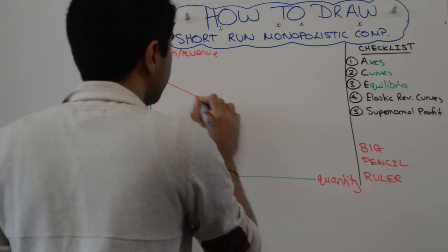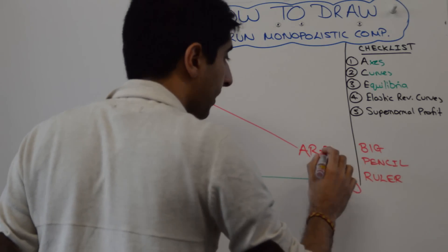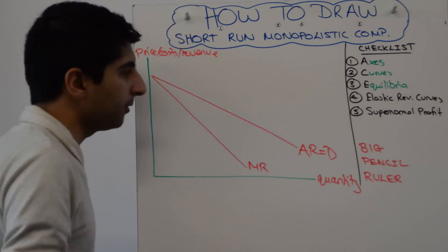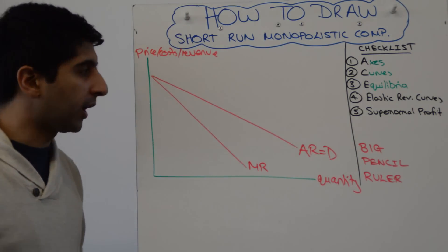So something like this is perfect. So that's AR which is equal to demand. Label it like that. MR which is twice as steep. So it's slightly shallower than what you're used to drawing in monopoly.